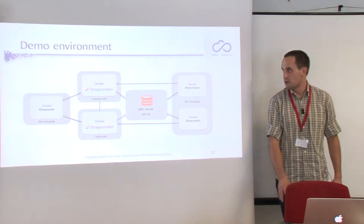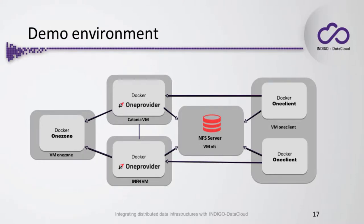We've prepared a demo environment which consists of five virtual machines, each with a public IP address. In four of them there are OneData components deployed in Docker containers. We've got one zone, two providers running on two other virtual machines, and one client — both running in Docker. Those three virtual machines have access to an NFS server hosted on the fifth virtual machine, so that both one provider and one client has access to the data.